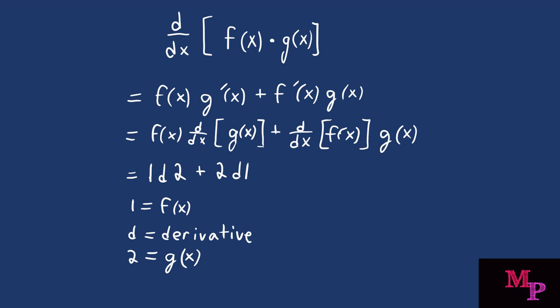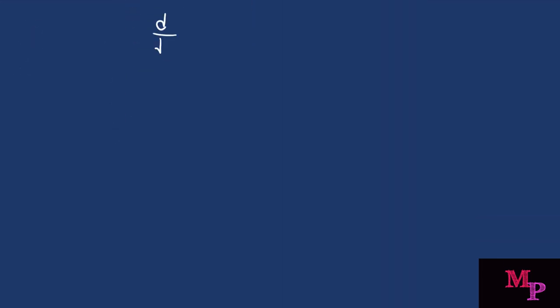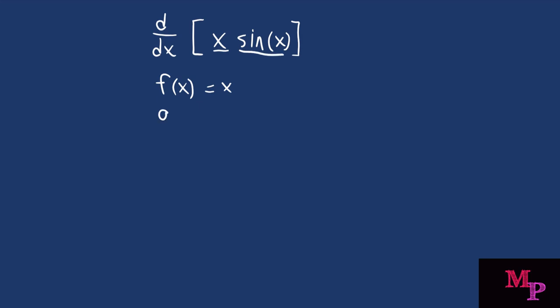Now that we have the rule down, let's try an example. We're taking the derivative of x times sine of x. First, identify your functions: f(x) = x is your first function, and g(x) = sine of x is your second function.